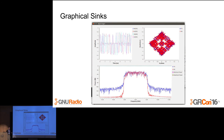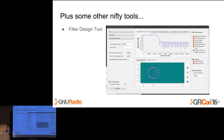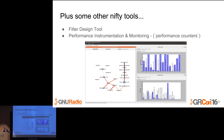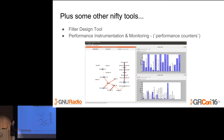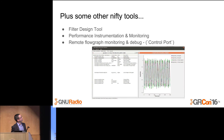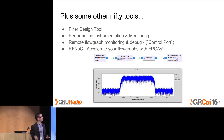We have a lot of graphical sinks for you to use, including simple things like oscilloscopes and frequency analysis, constellation plots, and a real-time spectrum analyzer called Phosphor, written by Sylvain, who is also here — really cool software, and you'll almost certainly see it in numerous booths in the vendor area. Like any good toolkit, you can rearrange all these graphical sinks to create an application front panel that works best for what you're trying to do. We also have a filter design tool, performance instrumentation called performance counters, remote flow graph monitoring and debug, and RFNOC, which allows you to accelerate flow graphs with FPGAs.